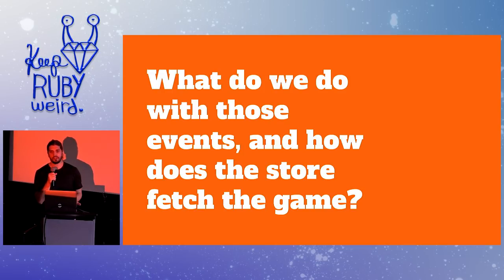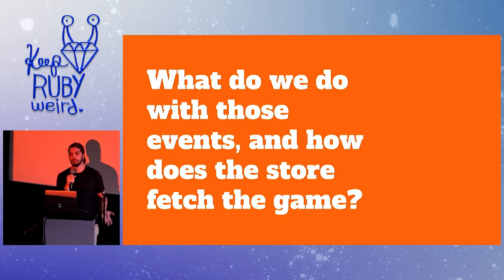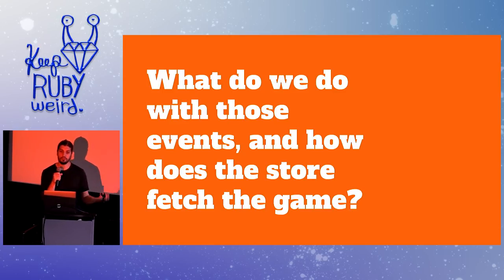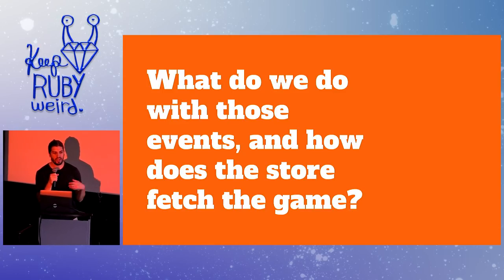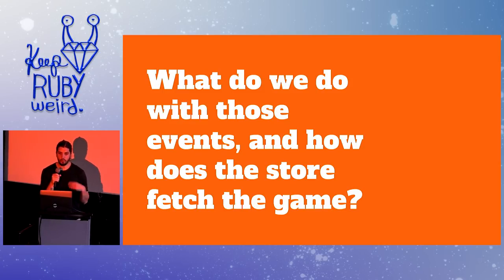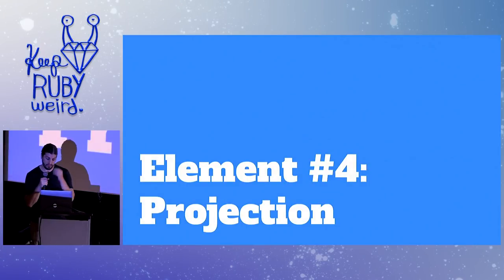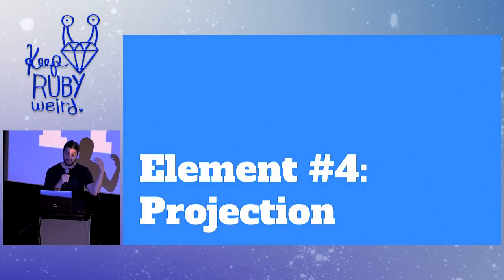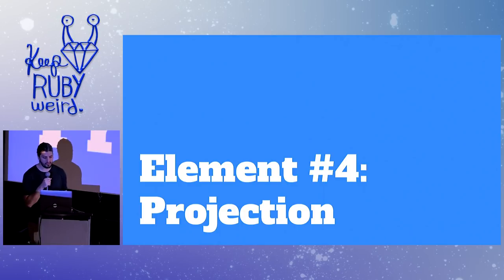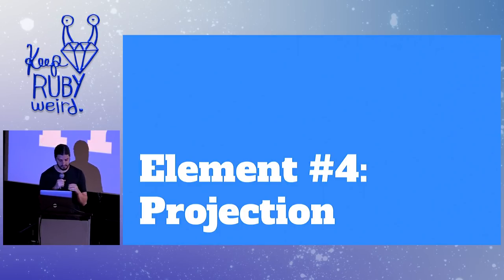I showed you an entity that doesn't have any persistence attached to it, and a store that can fetch the entity. How do we get a game entity from the store? And what are we doing with those events that we publish? It turns out the answer to both questions is the same, because we're using event sourcing to track the state of our entities. We have something called a projection — this thing is really going to impress them.